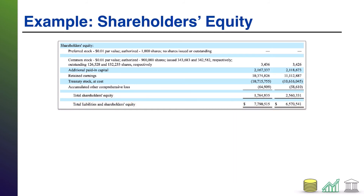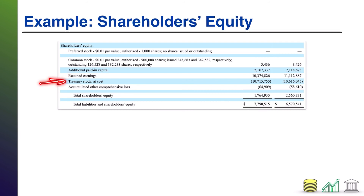As far as order for your shareholders equity accounts, you are typically going to list your stocks first — with preferred first and then common, just as you see here. You are typically going to list your additional paid-in capital second, then retained earnings after that. Treasury stock typically goes at the very end because it is actually a subtraction from shareholders equity — it's what we call a contra equity account. That's beyond the scope of this video, but just know that this is the general order. If there is any accumulated other comprehensive income, that will also go at the end along with the treasury stock.